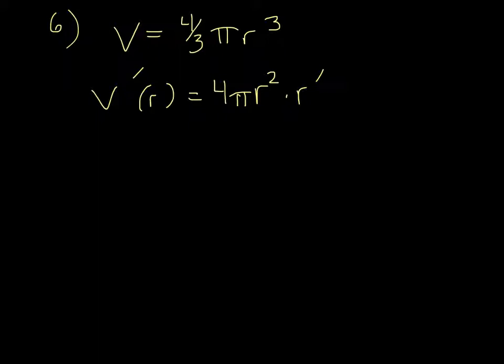If we take the derivative of that with respect to r, we're going to get 4πr² times r'. Now, we just got to put the values in that they give us. So it's going to be 4π, and then the radius is 14, so 14². And then, r' is 0.4 centimeters per minute. And multiplying that all out, we should get 985.2.